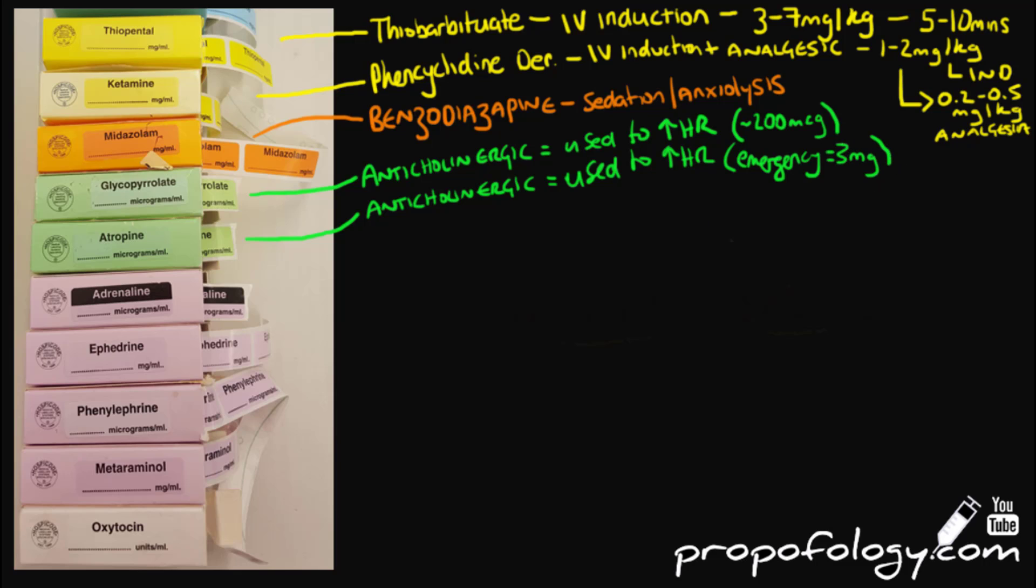Adrenaline is a naturally occurring catecholamine. It's an alpha and beta agonist. Basically, it's used either as an infusion in intensive care at 0.01-0.1mg per kilogram per minute, or as 1mg IV in the ALS protocol but only for the arrested patient. It can also be used in anaphylaxis in a 1 in 1000 concentration, and that's given intramuscularly, not intravenously.